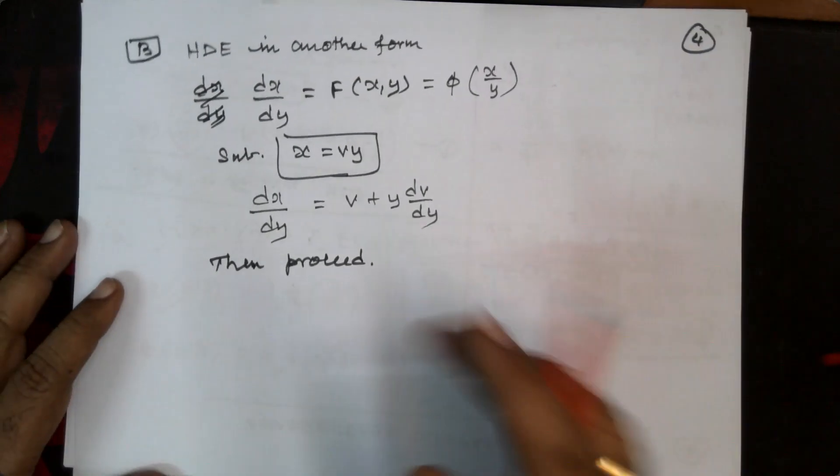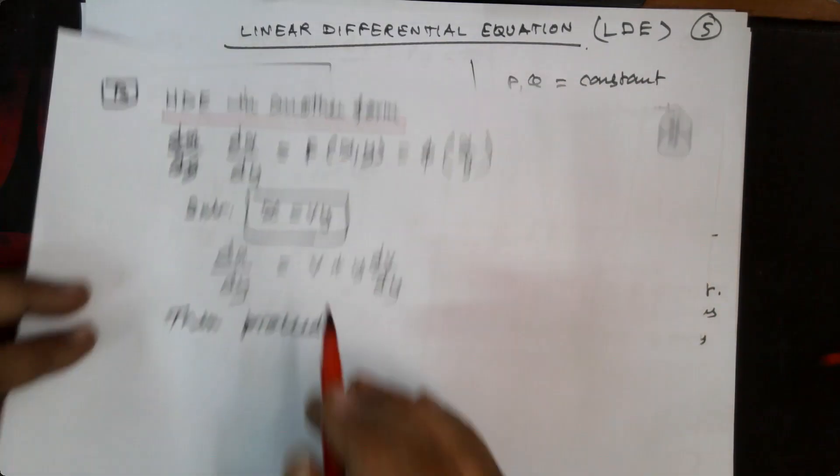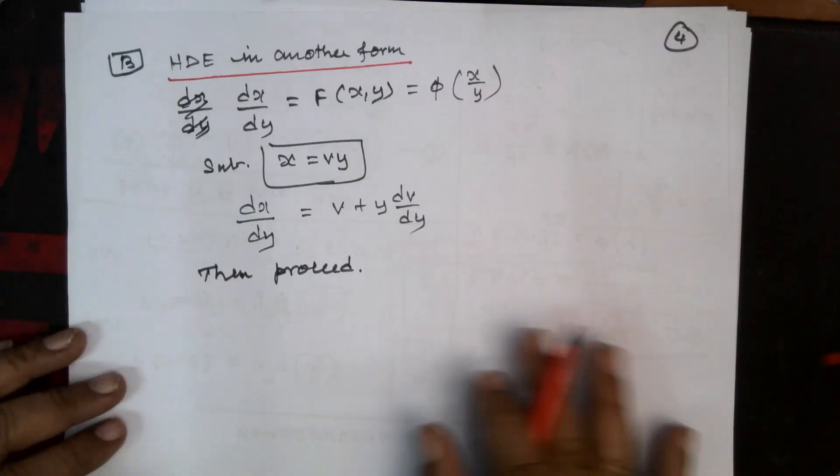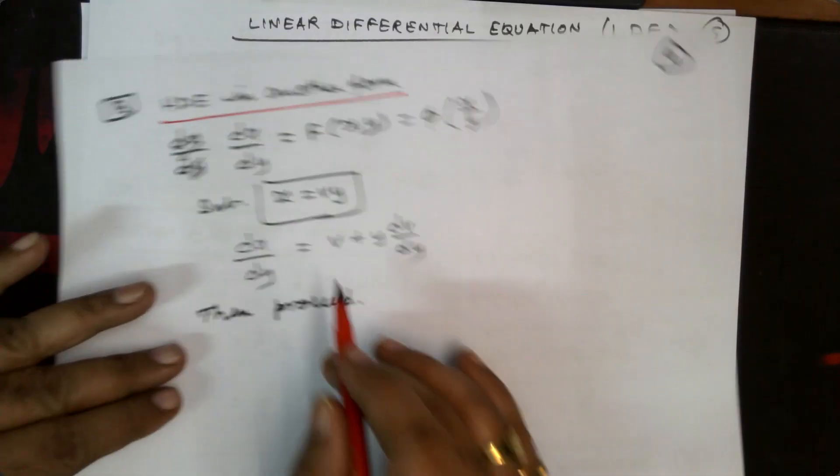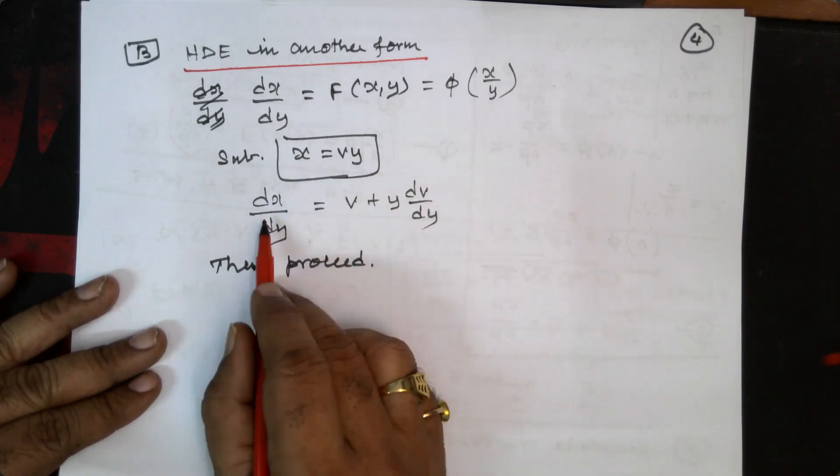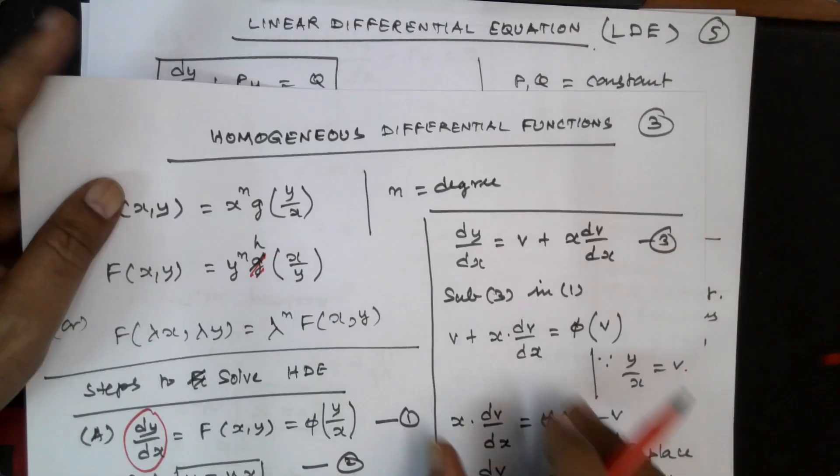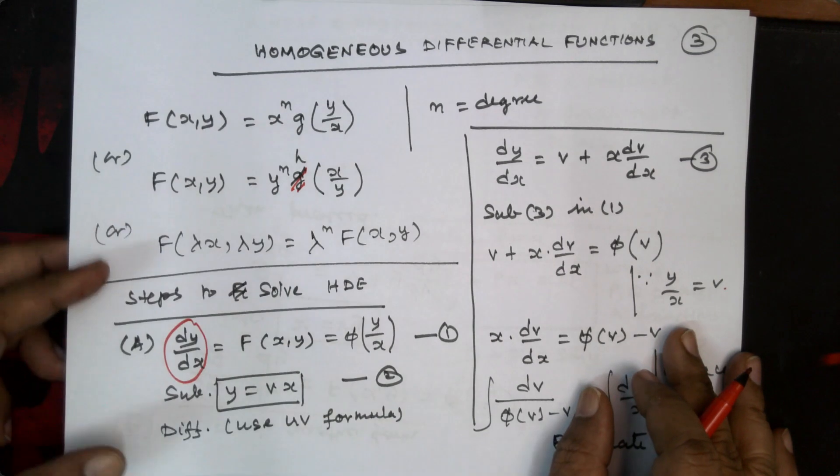Now for the second one, that is another form, homogeneous differential equation in another form. In this case, this is available as dy by dx, whereas here it is dx by dy. So dx by dy is equal to f of x comma y and phi of x by y. Whereas in this case, y by x. Now what we are supposed to do? We have to substitute x by vy. So here y equals vx, in this case x equals vy. Now dx by dy, so you can apply the UV formula. So dx by dy differentiated equals v plus y into dv by dy. And just like what we have done here, you can proceed like this. So this is the homogeneous differential equations.